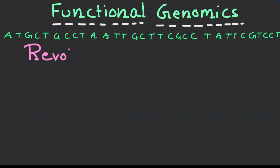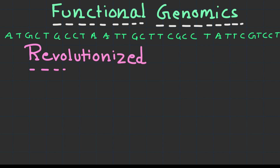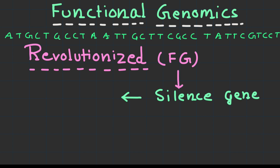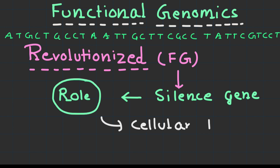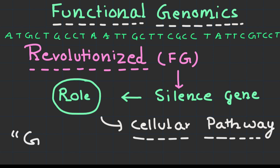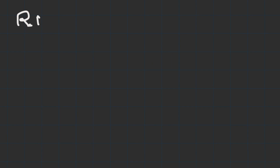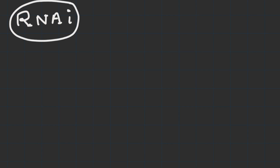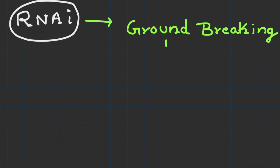RNAi has revolutionized functional genomics, allowing researchers to systematically silence genes to uncover their roles in biological processes. Large-scale RNAi screens have been conducted to identify genes involved in various cellular pathways, providing valuable insights into complex biological networks.